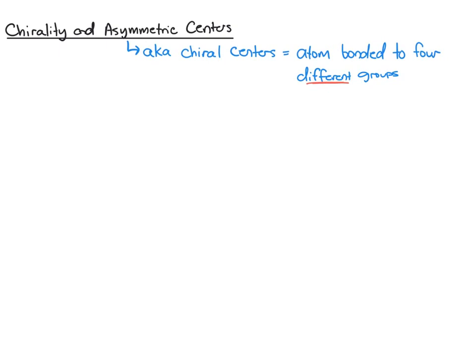sp3 carbons are always bonded to four groups, but the question is, are they different? So let's look at some examples and figure out whether or not we're looking at chiral centers.